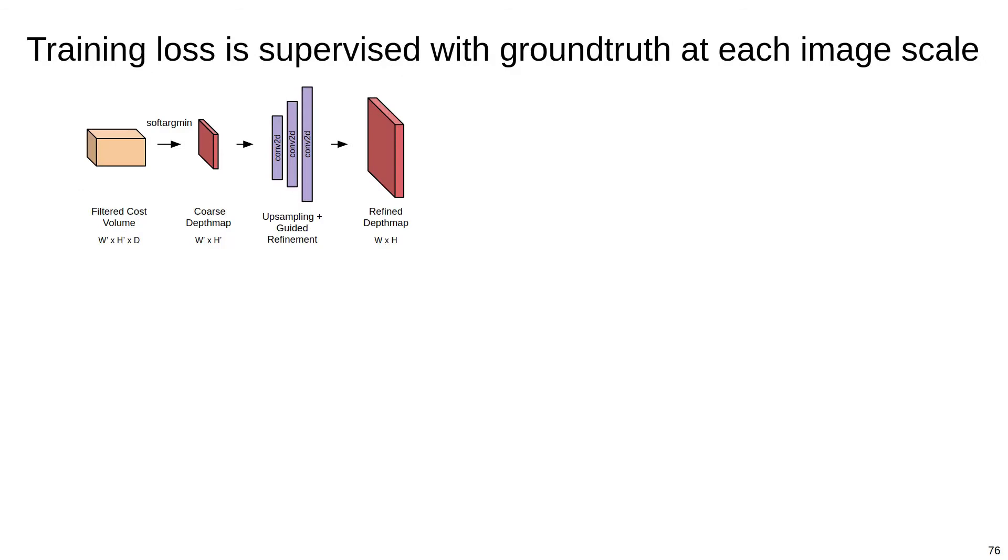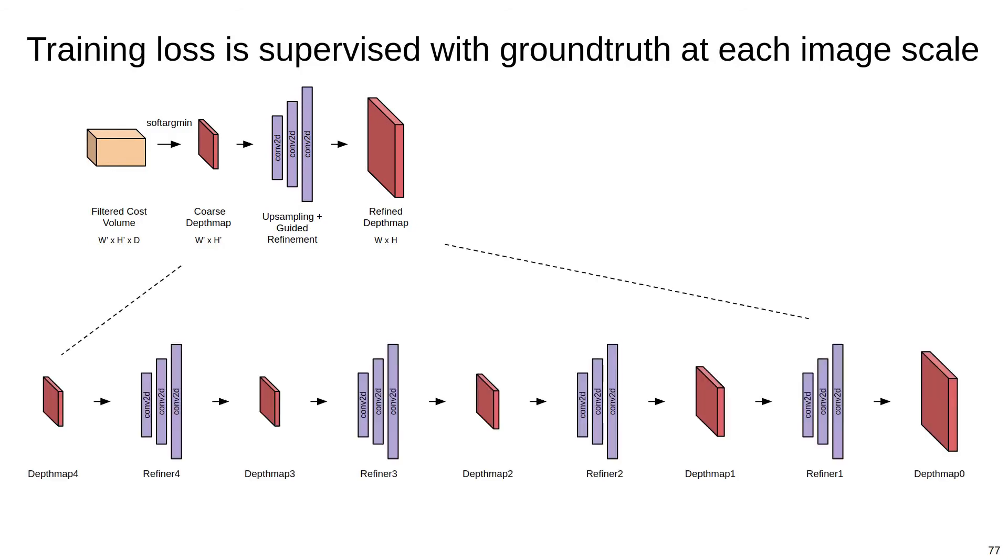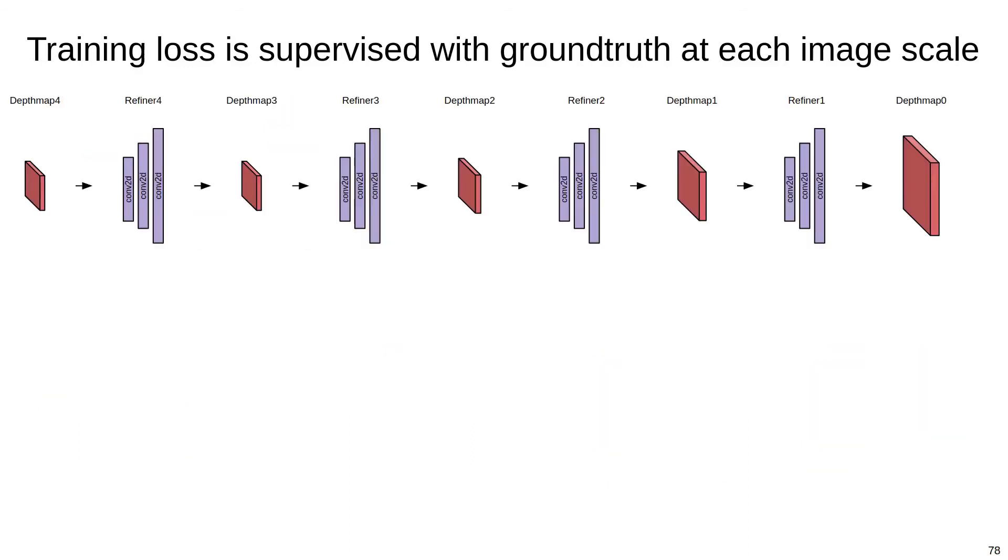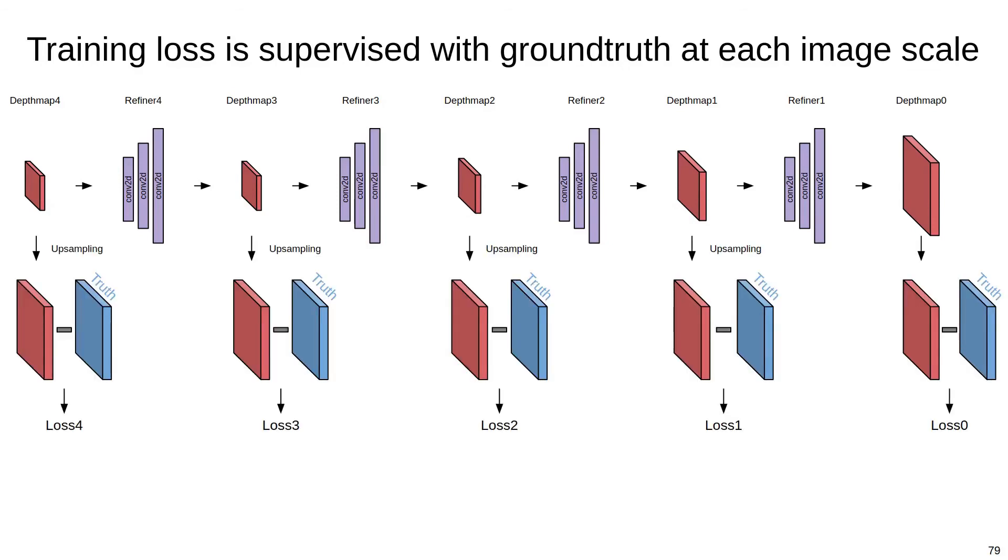The training loss for the network is generated by comparing the series of refined depth maps to the ground truth depth labels. The picture above is slightly simplified. In reality, we apply a series of four upsampling and refinement layers, each of which produces a depth map. The training loss is then computed by taking each depth map, upsampling to the full resolution, and taking the difference with the ground truth. These individual losses for each image scale are then summed to generate the final loss, which we optimize using stochastic gradient descent.